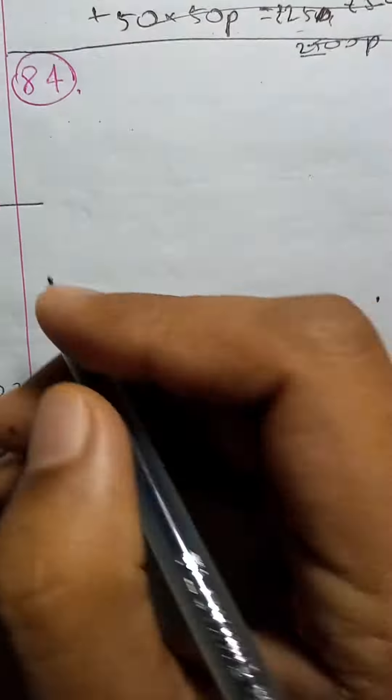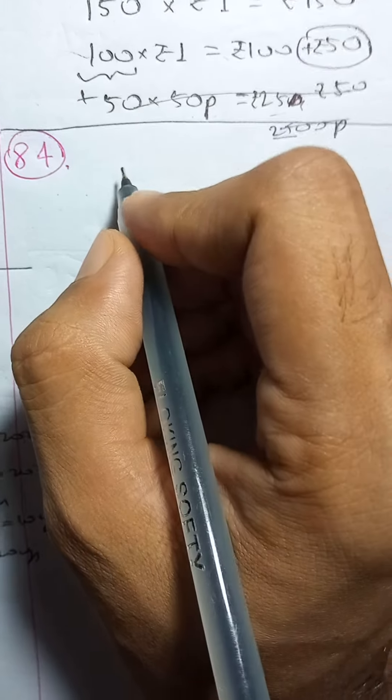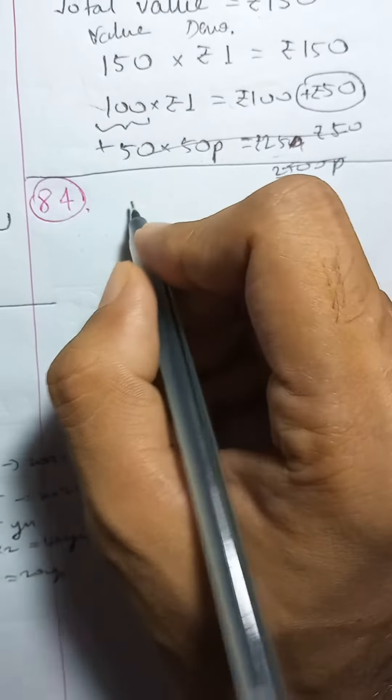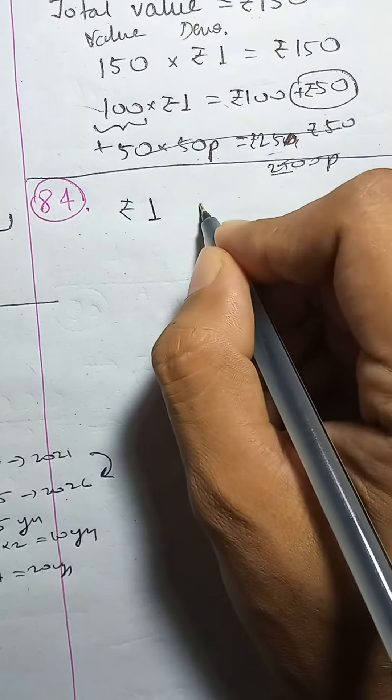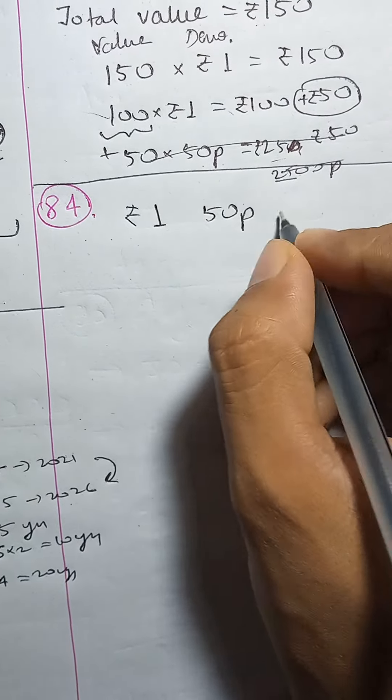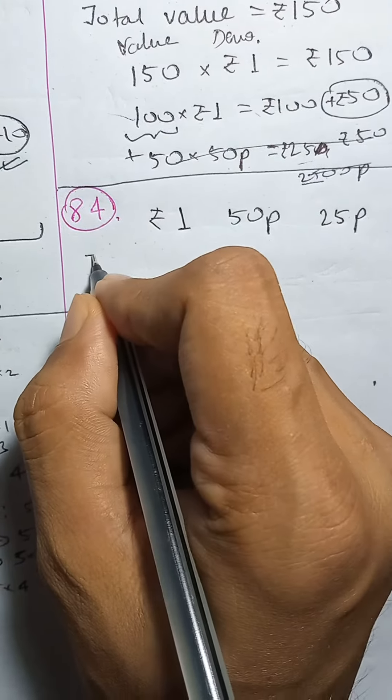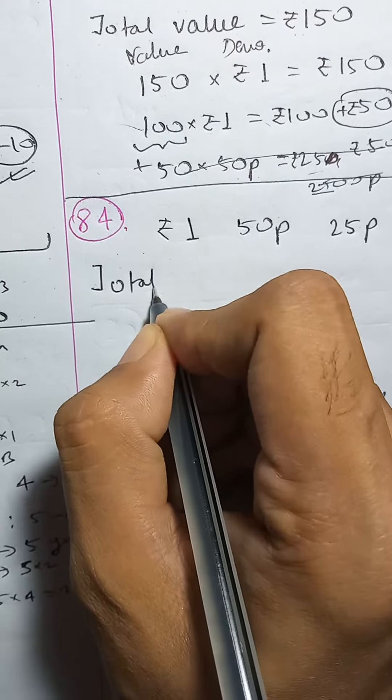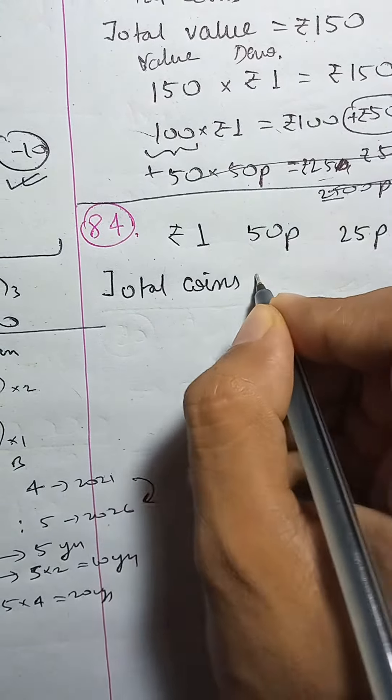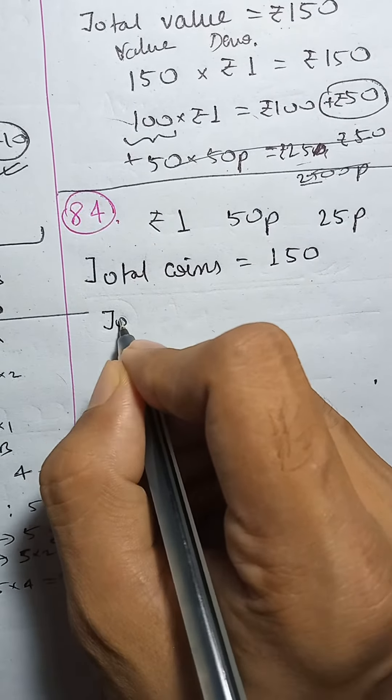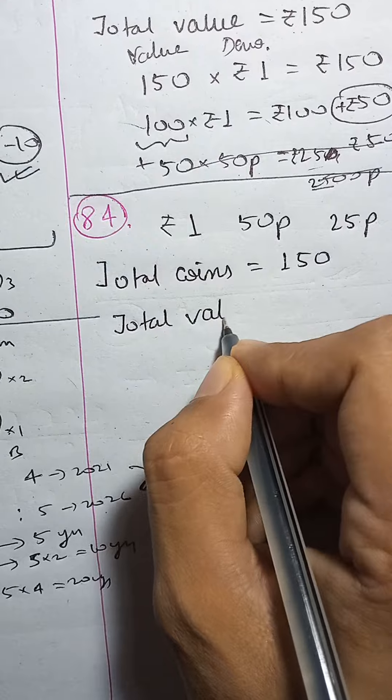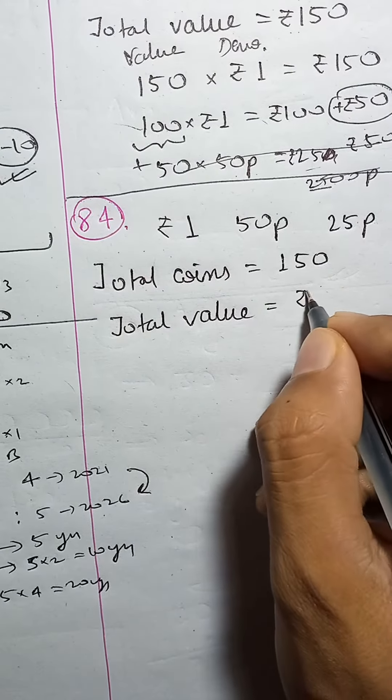Let's see. Let's write the price of rupees 1, 50 paise and 25 paise. Total coins is rupees 1 and 50 paise.